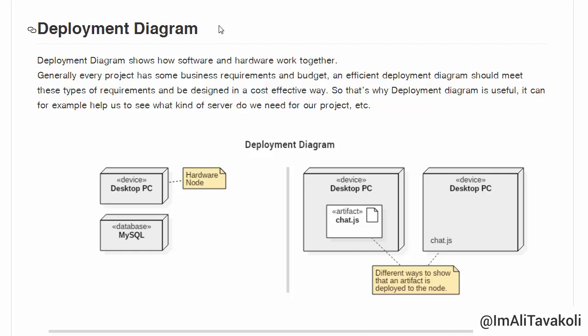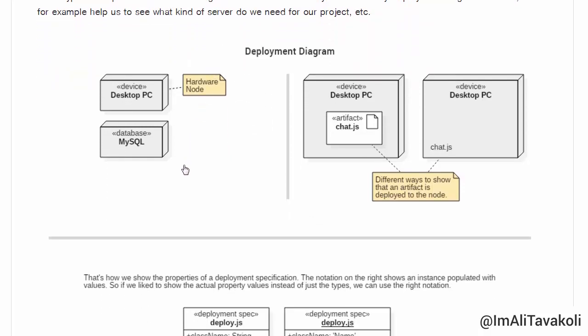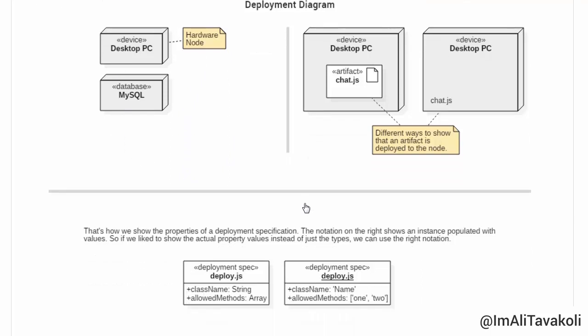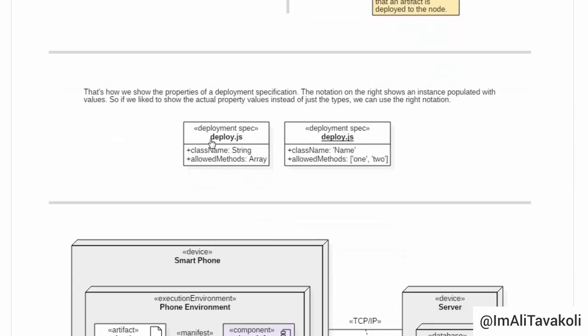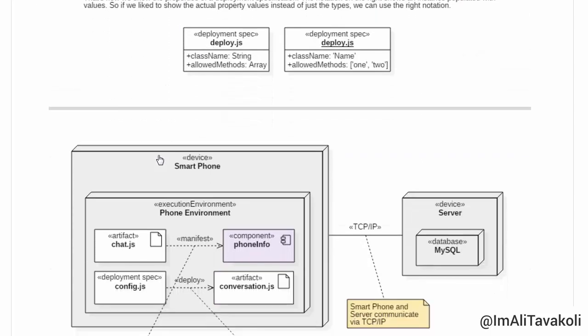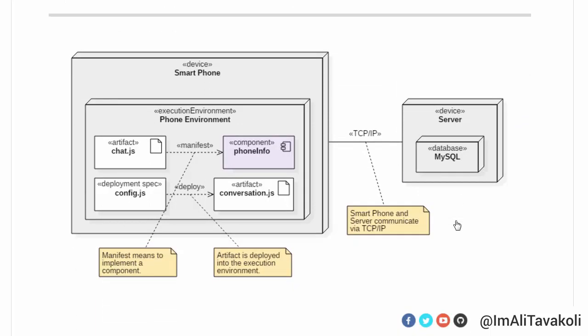It can, for example, help us to see what kind of server we need for our project. Here is an example of a Deployment Diagram that we will take a look at in more detail. There are some nodes and communication between nodes, etc.